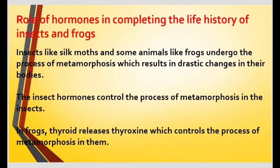Role of hormones in completing the life history of insects and frogs: Insects like silkworms and some animals like frogs undergo the process of metamorphosis, which results in drastic changes in their bodies. The insect hormones control the process of metamorphosis in insects. In frogs, the thyroid releases thyroxin, which controls the process of metamorphosis in them.